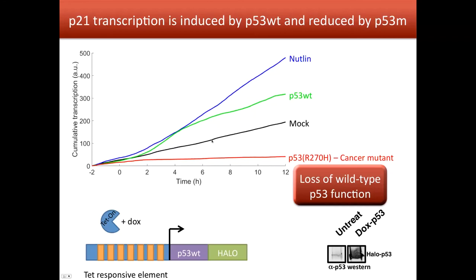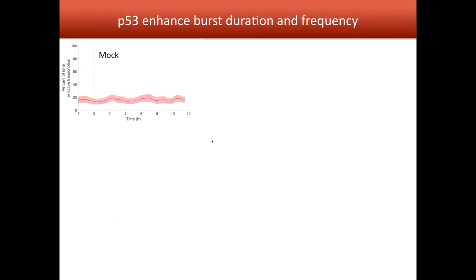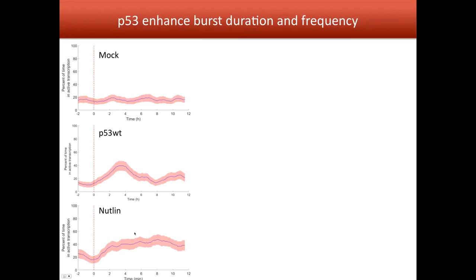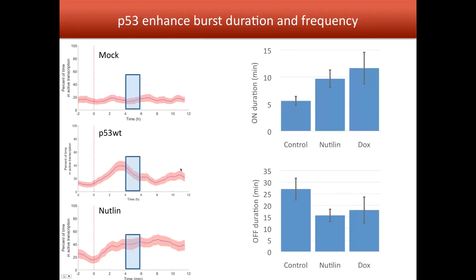When we induce p53 concentration, we increase the production of p21 mRNA. Looking more precisely at the number of active transcription sites, we see that cells transcribe more often — the frequency increases with both p53 overexpression and nutlin induction. Interestingly, with nutlin the level is more stable over time, because nutlin inhibits degradation of p53 by MDM2. When we overexpress p53, we eventually overexpress MDM2 — which is itself under p53 control — leading to oscillations in p53 levels not seen with nutlin.